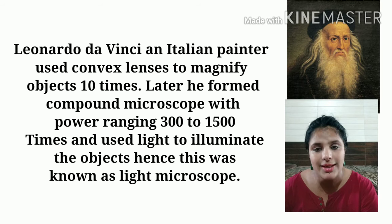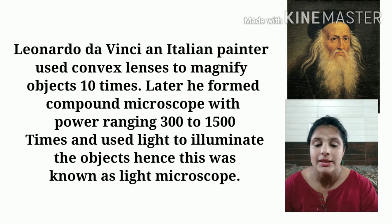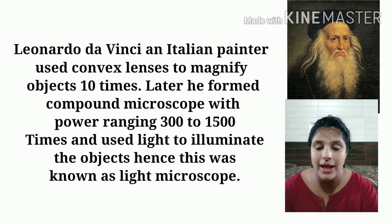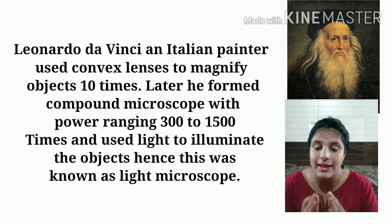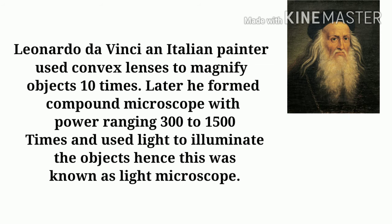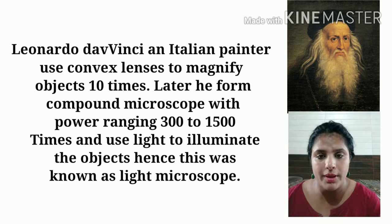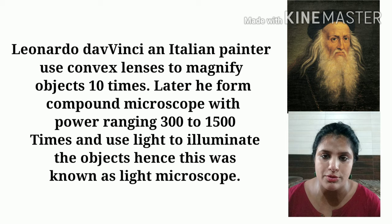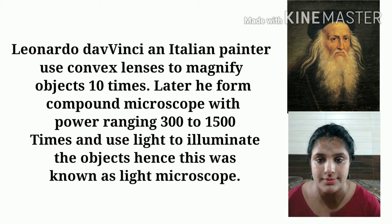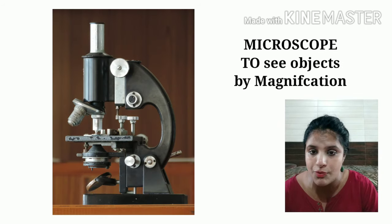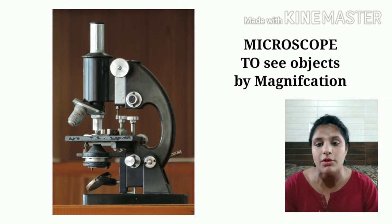How was the cell discovered and what scientists contributed? There was a scientist Leonardo da Vinci — basically he was a painter. To examine the minute parts of his paintings, he combined certain lenses to magnify them. He found that combining lenses allowed him to magnify a part of an image up to ten times. From this he got the idea that we can magnify objects with the help of lenses. Later, a compound microscope was formed, which can magnify objects from 300 to 1500 times. Without a proper microscope, the identification of a cell would not have been possible.